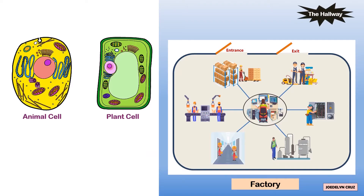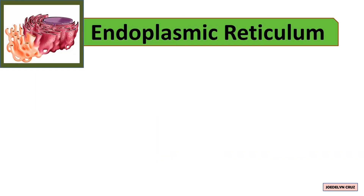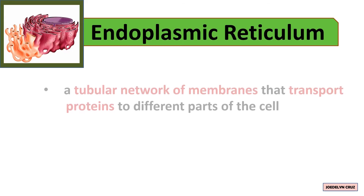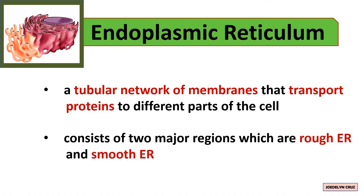The hallway in the factory represents the endoplasmic reticulum. This hallway provides a pathway for the workers to transport products to other rooms, and products are also produced in this hallway. The endoplasmic reticulum is a tubular network of membranes that transports proteins to different parts of the cell. It consists of two major regions: rough endoplasmic reticulum and smooth endoplasmic reticulum.